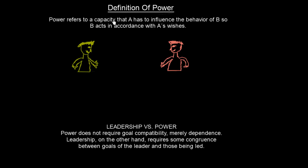The definition of power says: power refers to a capacity that some person A has to influence the behavior of B, so that B acts in accordance with A's wishes.